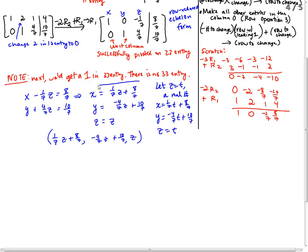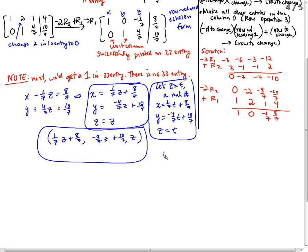So then x is 1 over 7 t plus 8 sevenths. Y is negative 4 over 7 t plus 10 sevenths. And z is equal to t. So you might see the answer written like this. Or like this. Or like this. If you notice, there are infinitely many solutions. They're all related to each other. But they're definitely infinitely many because z can be anything. There's no restrictions on z. So there you go.